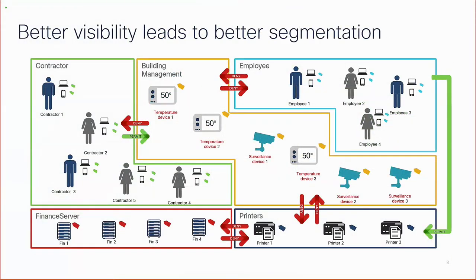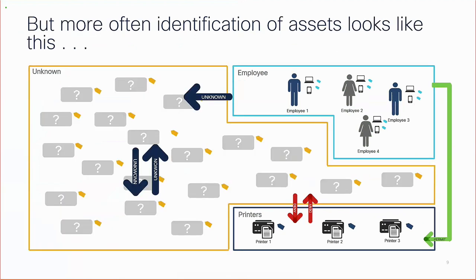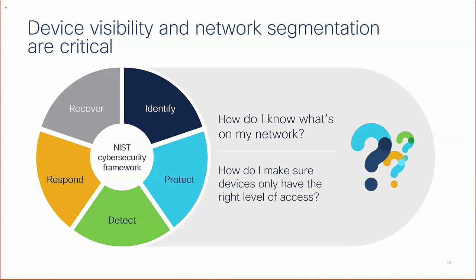The expectation is that users and devices are clearly identified — contractors, building management systems, temperature devices, surveillance devices, employees — so that you can apply policies and segmentation. However, while IT-managed and unmanaged devices can often be classified, a large number of enterprise IoT and medical IoT devices remain unknown. We also need to align with the NIST cybersecurity framework, specifically the 'identify' and 'protect' pillars of the attack continuum — you need to know what's in your network to apply the right level of access control.